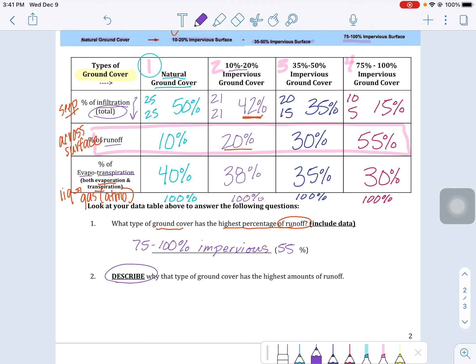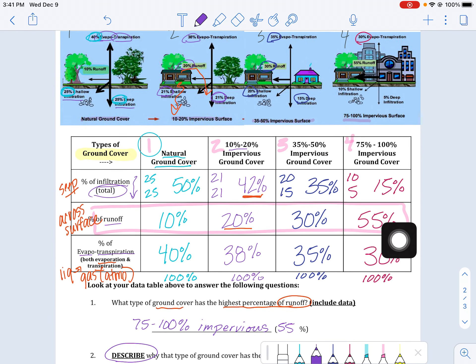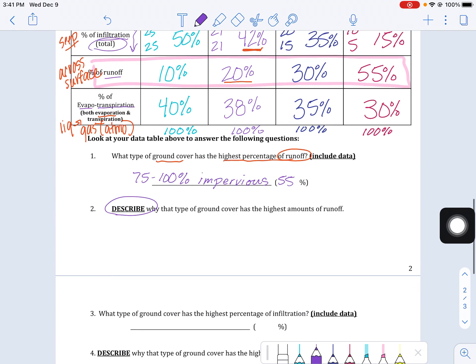Now here, number two is where you are going to describe why. Why is that ground cover have the largest runoff? What's going on on the surface there to make more water stay on top? And so again, when we have these describes, that gives us a little clue. We want to begin with that sentence starter.